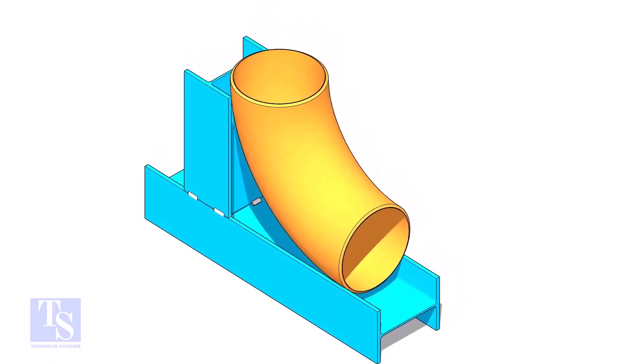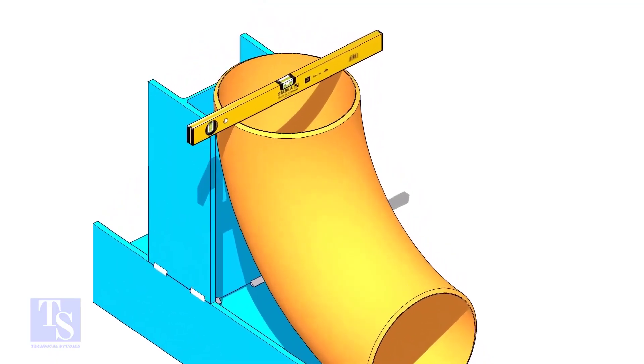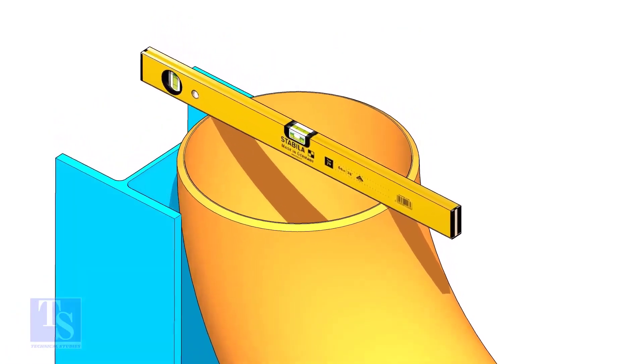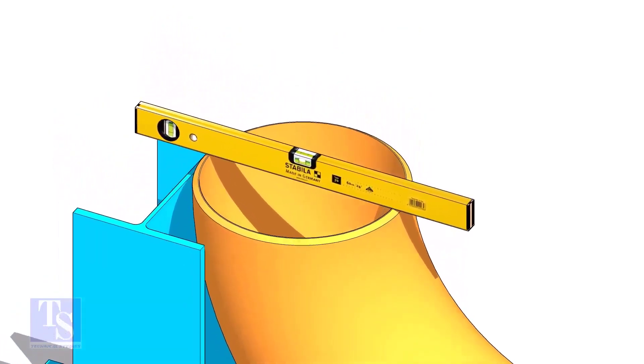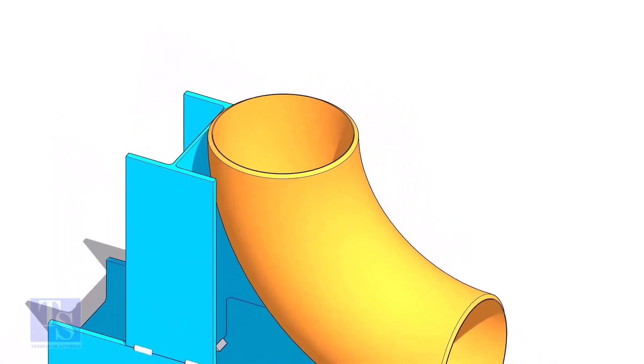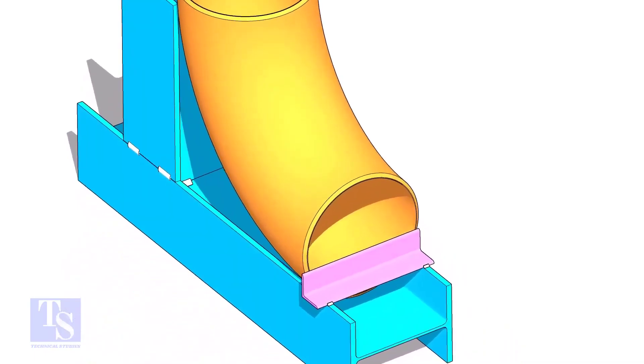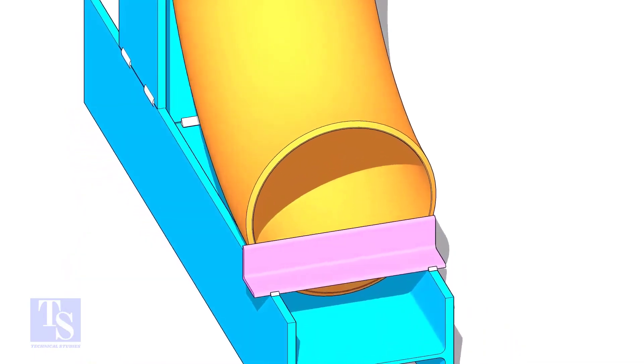Put the elbow in the jig. Level the top face of the elbow on both ways. Tack weld a piece of angle bar or a piece of plate at the bottom side of the jig to arrest the elbow.